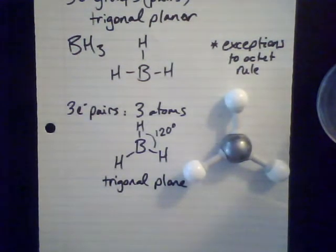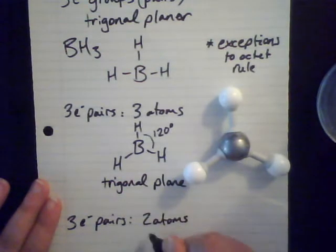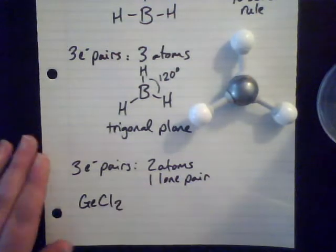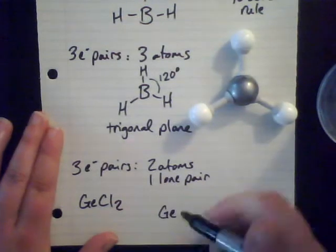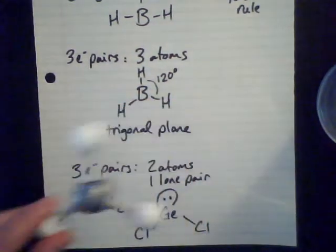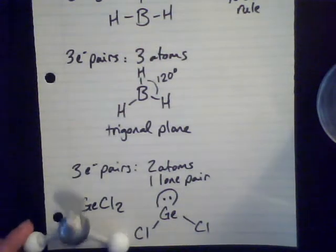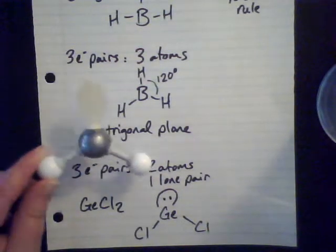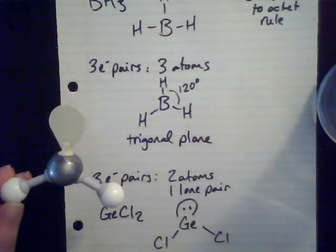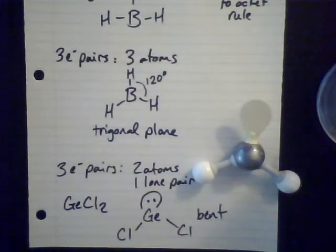I could also have three electron groups around a central atom where I have three electron pairs total, giving trigonal planar geometry, but only two of them are atoms and one is a lone pair. An example is germanium dichloride, GeCl2. Germanium is at the center with a lone pair on top and two chlorines below. I still have three things around a central atom, but I've replaced one atom with a lone pair. This looks like my water molecule — and that's the name of this shape: it's also bent. With three electron pairs and two atoms, I end up with a bent structure.